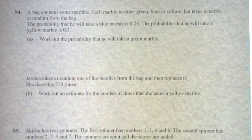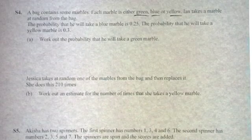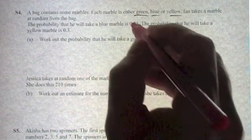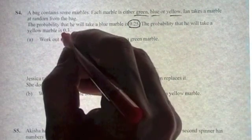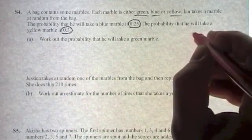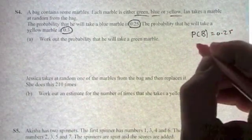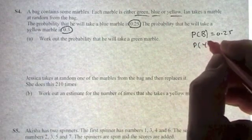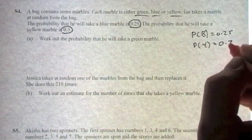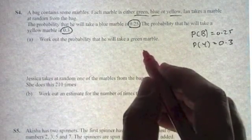This next question describes a bag containing some marbles. Each marble is green, blue, or yellow. Ian takes a marble at random from the bag. The probability he'll take a blue marble is 0.25, the probability he'll take a yellow marble is 0.3. The question says work out the probability you take a green marble.